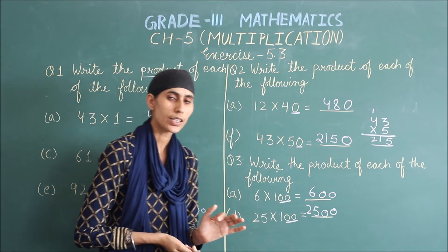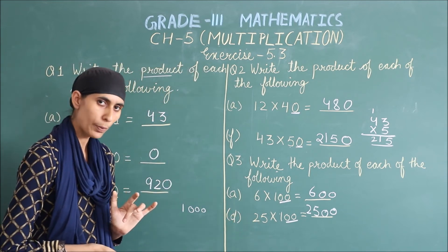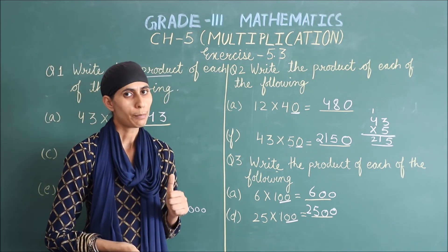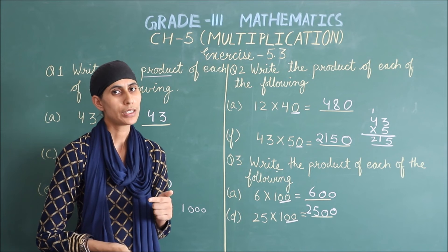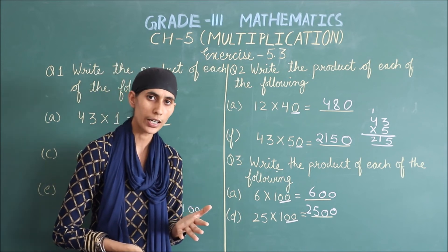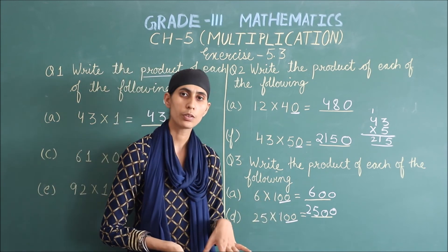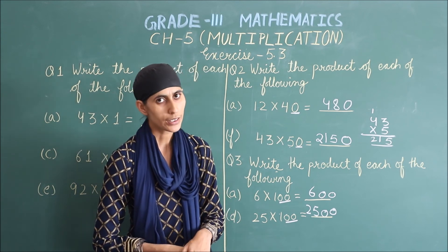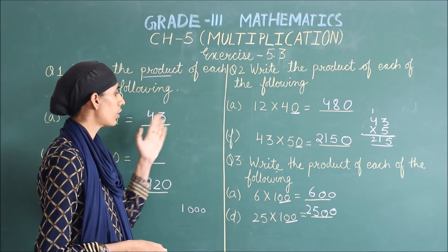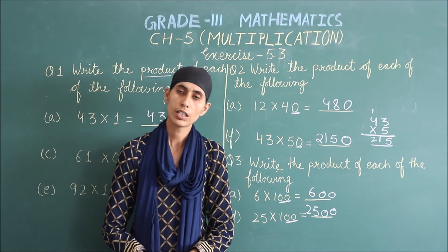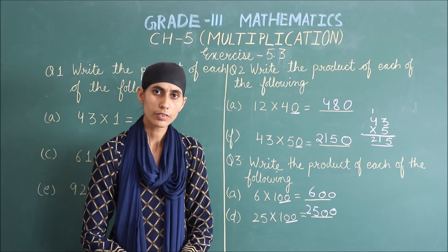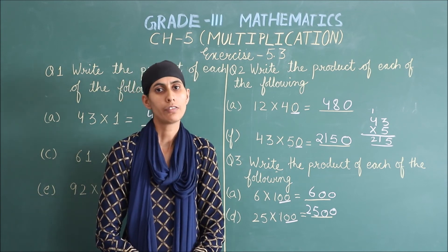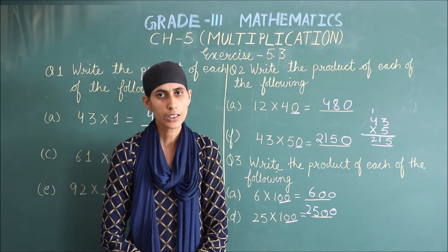آج ہم نے کیا سیکھا؟ Multiplication کی کچھ properties: پہلی — کسی بھی number کو 1 سے multiply کرنے پر number itself آتا ہے۔ 0 سے multiply کرنے پر 0 آتا ہے۔ اور اگر 1 کے ساتھ صرف 0s دیے ہوں تو directly zeros لگا کر multiply کر سکتے ہیں۔ I hope you got questions 1, 2, and 3 of Exercise 5.3. On the basis of this video, you can solve the rest of the parts. If you have any problem, you can contact me. Thank you.